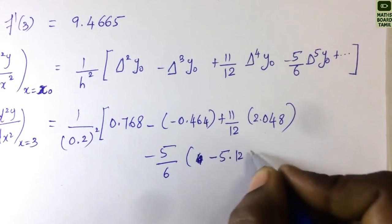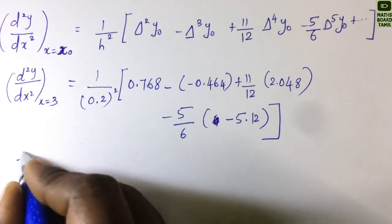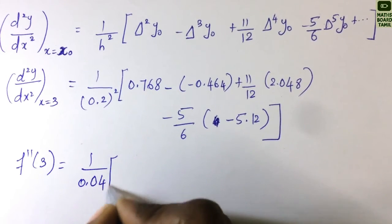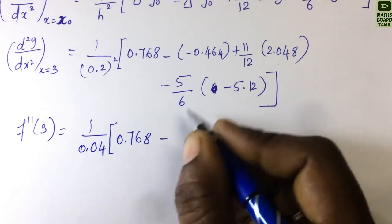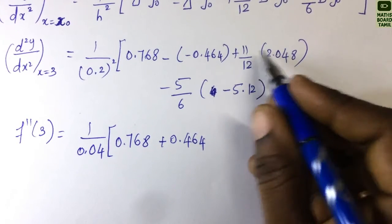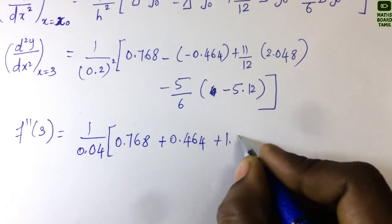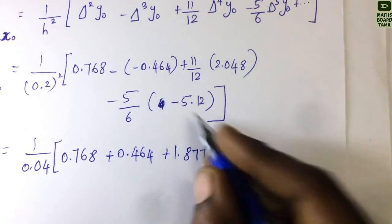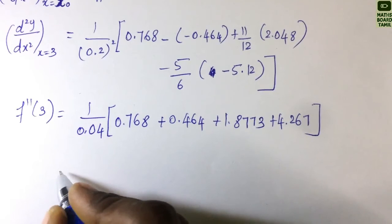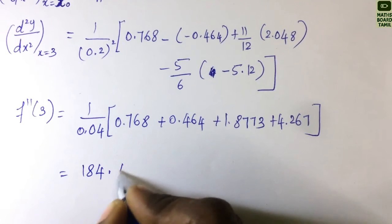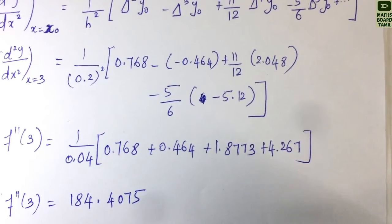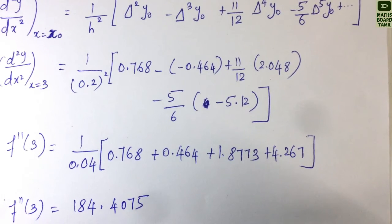We simplify: (1/0.04)[0.768 + 0.464 + 1.8773 + 4.267]. Adding all terms and dividing gives us the final answer for f''(3).